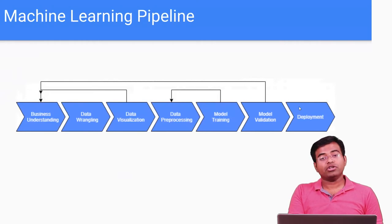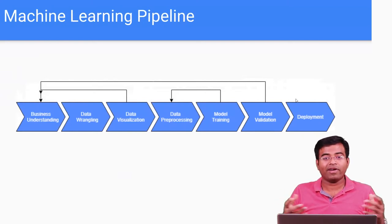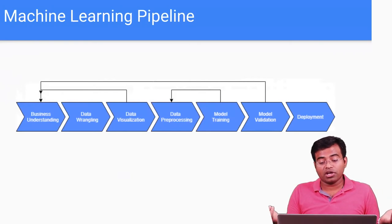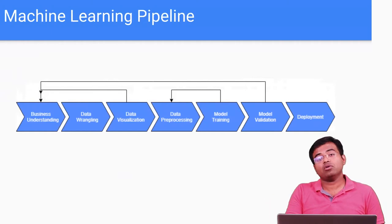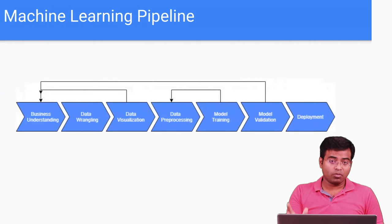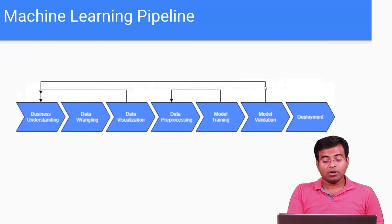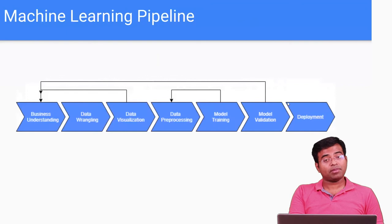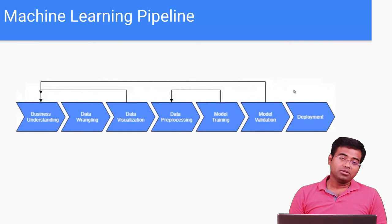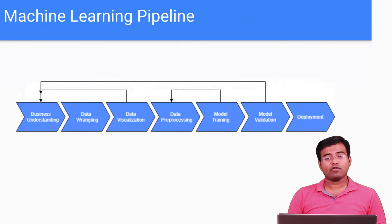In model validation, there are a lot of strategies for validating a model, and there are a lot of possible models. You have to find the best model and model configuration. If you're not satisfied, you might go back to data pre-processing or even revisit the business strategy. Once you have a perfectly trained model — which needs a lot of experimentation, a lot of tuning, and possibly a lot of computation resources — you go for deployment.